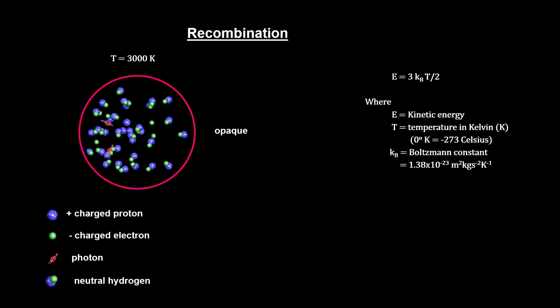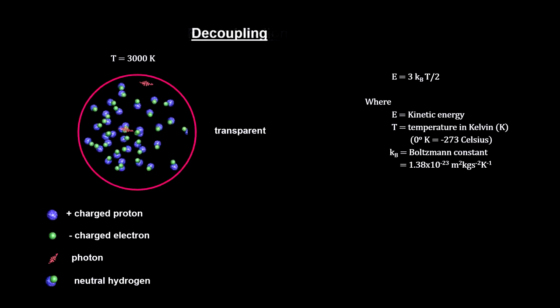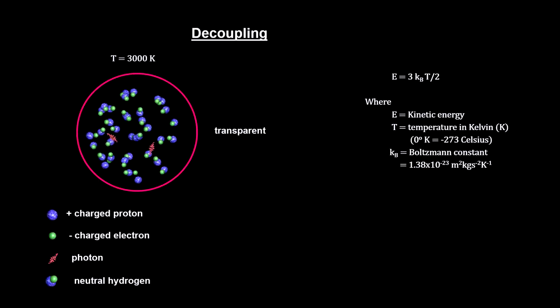Once the transformation to electrically neutral particles is complete, light will travel through space without any further interactions. This is called decoupling. The radiation is said to have decoupled from the electrons and protons. The plasma becomes transparent.